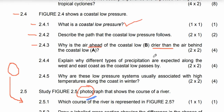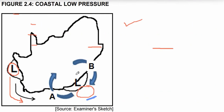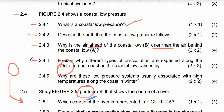So the air that is ahead of the system is drier than the air behind the coastal low because the air behind the coastal low comes from the ocean, and that air brings moisture to the land. So the ones that are behind the coastal low A have moisture from the ocean. I hope you get it.